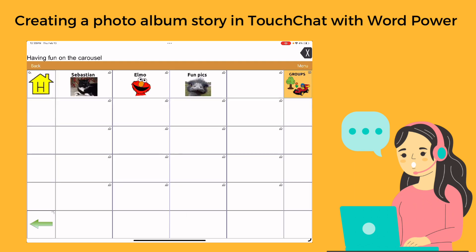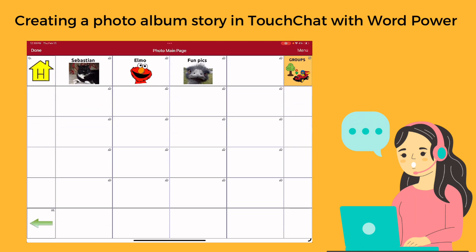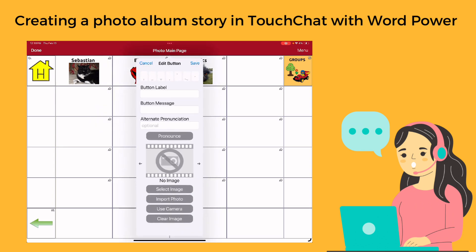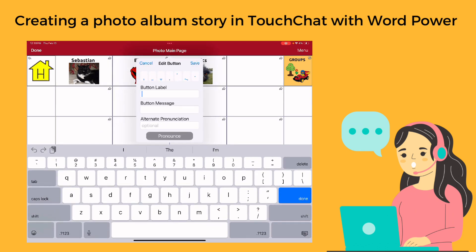So if we go back to this photo album, the way you're going to set it up for something new is like this. You're going to go on this page, select menu and edit page. Then go to a button and choose edit this button. I'm going to name it AMS visit and put some pictures from my visit to the school.